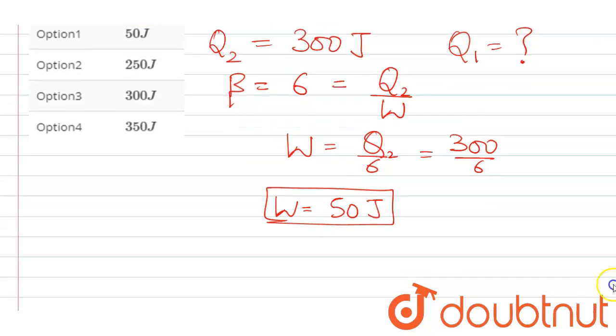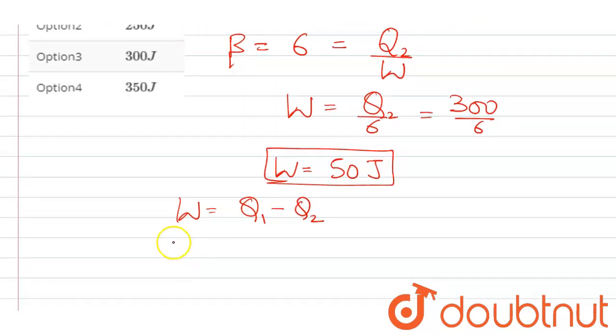Now we know the formula for work done equals Q1 minus Q2. Here work done is 50 joule. Q1 we have to determine and Q2 is 300. So Q1 comes out to be 350 joule.